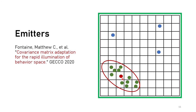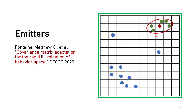The algorithm then performs local search through the emitter by generating more policies, continuing until the emitter reaches its termination criteria. At the end, only policies respecting the selection criteria are stored in the collection returned as the algorithm's result. Then another policy is selected, another emitter is instantiated, and the search continues.